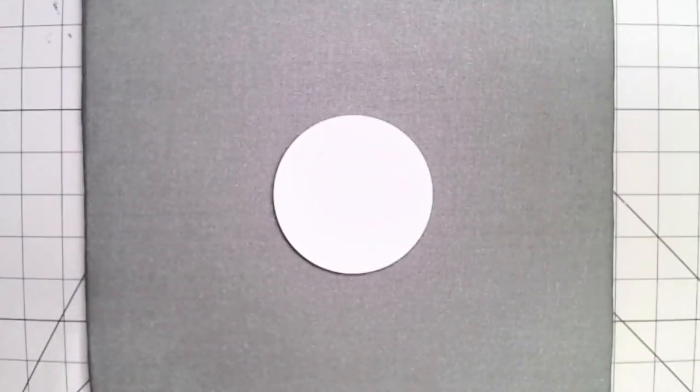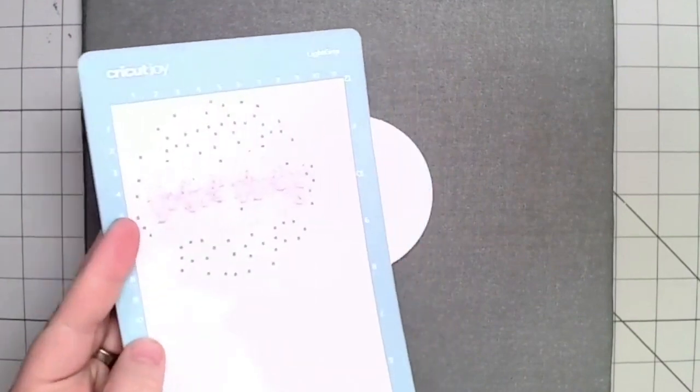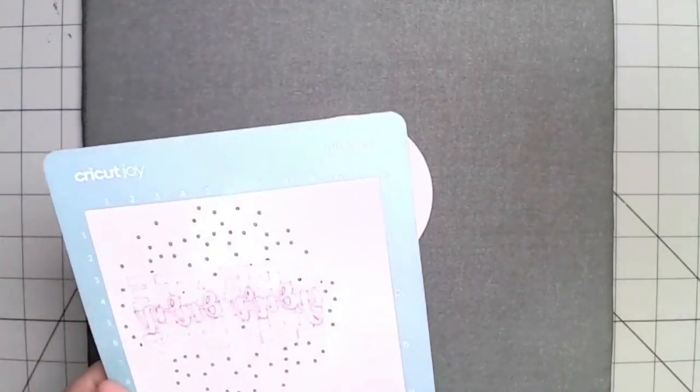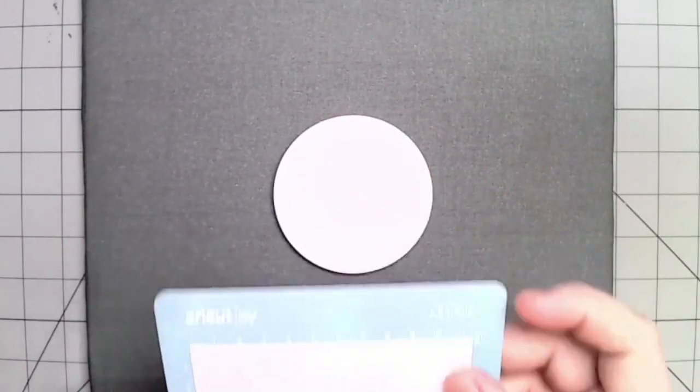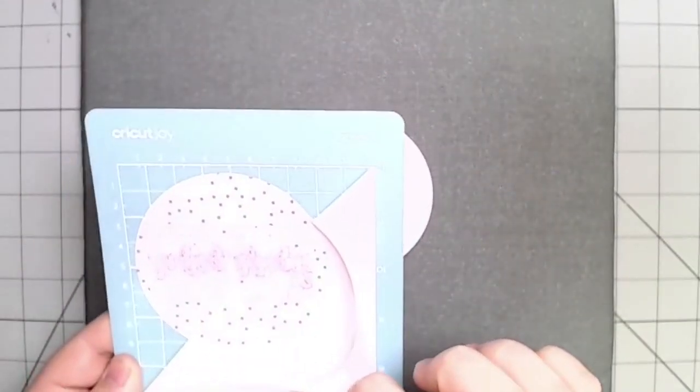So now I've laid down my Easy Press mat and I'm grabbing my design. I'm gonna go ahead here and I'm going to peel off the design. Super simple, I pulled it towards myself because I could actually kind of turn the mat down, so it makes it super easy for me to pull that full piece off.